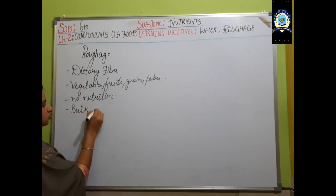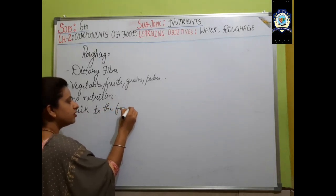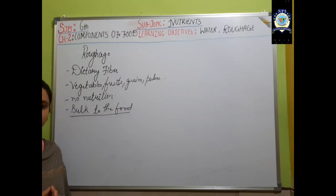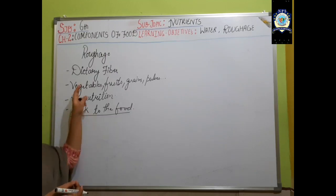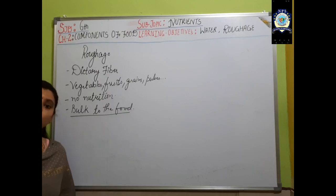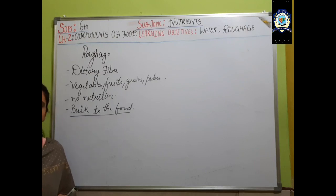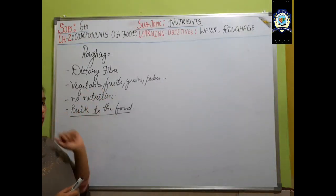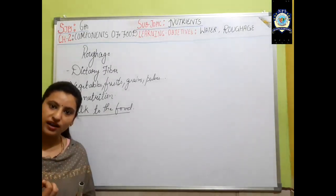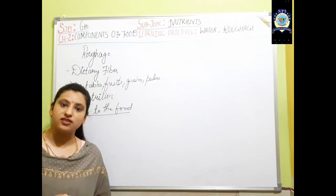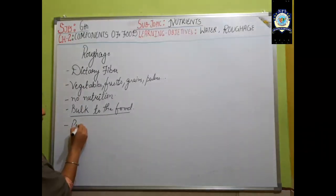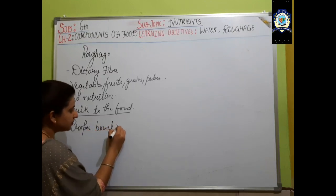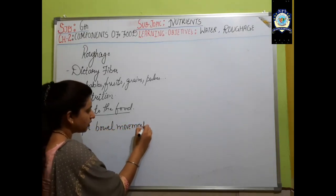Adding bulk to the food means the majority of the food we are eating comprises vegetables and fruits. Doctors also recommend eating more vegetables and fruits rather than drinking juices, soups, or liquid-type materials, because liquids are very tough to digest. When we eat vegetables and fruits, they add fiber to our diet, which is very important for proper digestion and helps in proper bowel movement of food.